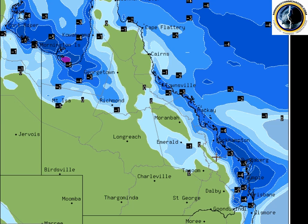Blue shaded areas indicate instability. Light blue is considered weak instability, darker shades of blue are high, and purple is very high instability levels. On Monday you can see that activity stretches right down the Queensland coast and into southeast Queensland. There are no guarantees that blue shading means thunderstorm development will occur, however it is indicating areas of instability.